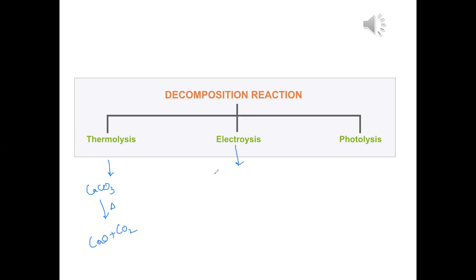Electrolysis, I can break NaCl, molten NaCl, I pass electricity through it, I get Na and Cl2. Photolysis, if I use light, sunlight, for example, silver chloride, h nu is a symbol of light, decomposes to give silver and chloride.